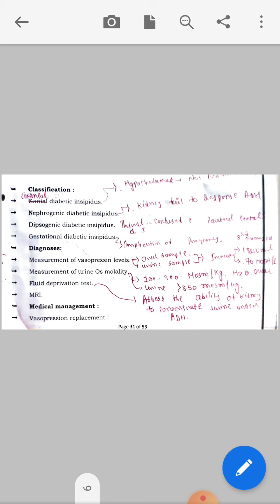Fluid deprivation test is mainly done to check the kidney's concentration ability. Since there is already low specific gravity and increased urine output, this test checks if there will be fluid electrolyte imbalance. The test checks the kidney's ability to concentrate urine. Next is MRI.